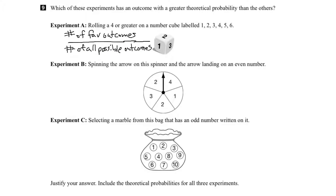Let's look at experiment A. We have to figure out the theoretical probability of rolling a 4 or greater when we roll a number cube. Let's start by asking ourselves what all the possibilities are. When we roll the cube or the dice, we can get a 1, 2, 3, 4, 5, or 6 — so there are 6 possibilities, and these 6 possibilities are all equally likely. That's the total number of all possibilities on the bottom.